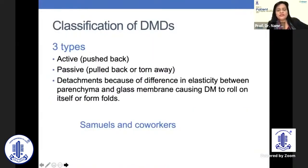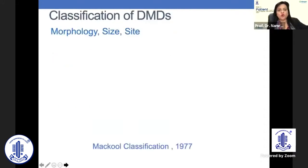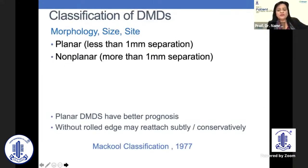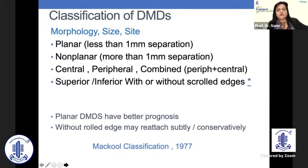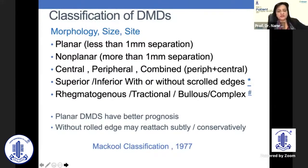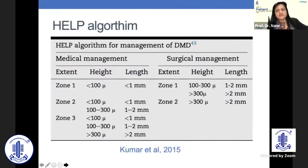DMDs can be classified into three types. The original classification described active, passive, or detachments due to difference in elasticity between parenchyma and glass membrane causing Descemet's membrane to roll on itself or form folds. The Makul classification from 1977 classified them as planar or non-planar, central, peripheral, or combined, and superior or inferior with or without scrolled edges. Planar DMDs have better prognosis and those without rolled edges may reattach spontaneously or even conservatively. They can also be classified as rhegmatogenous, tractional, or bullous complex.